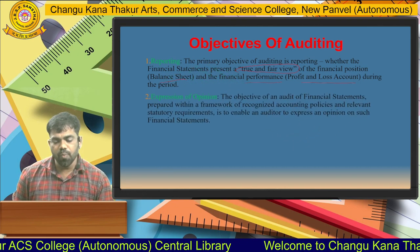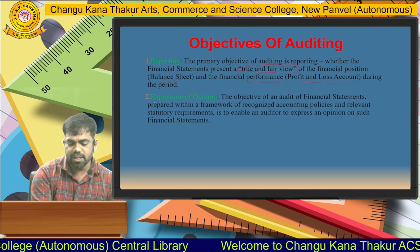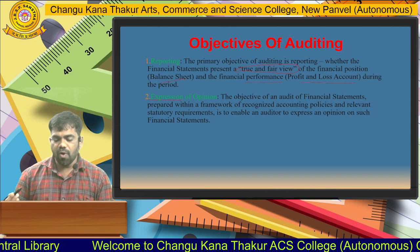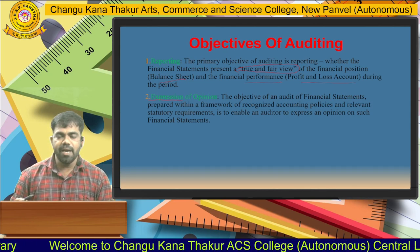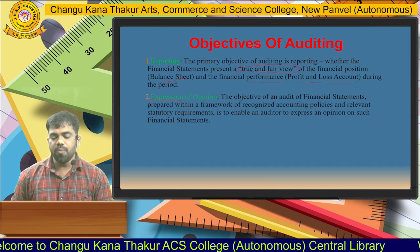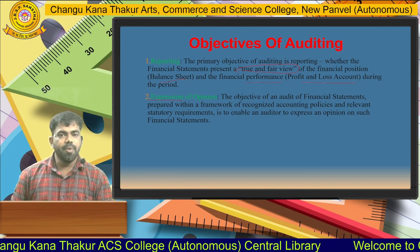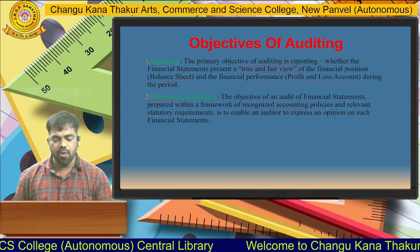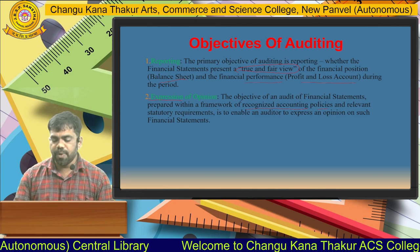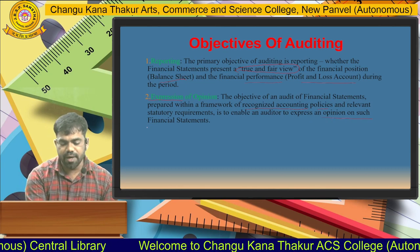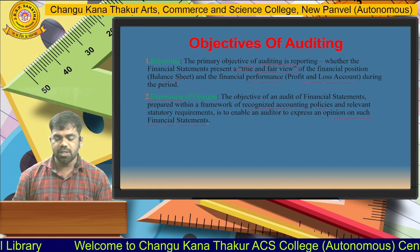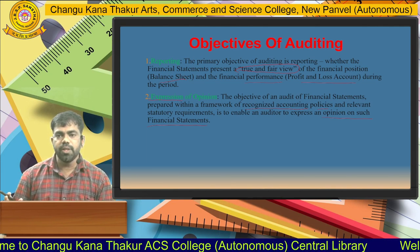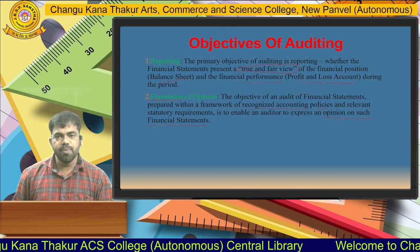The second objective is expression of opinion. As discussed, it is an opinion formed by the auditor — whatever the auditor feels, he writes and notifies in the audit report. The objective of an audit of financial statements prepared within the framework of recognized accounting policies and relevant statutory requirements is to enable an auditor to express an opinion on such financial statements.